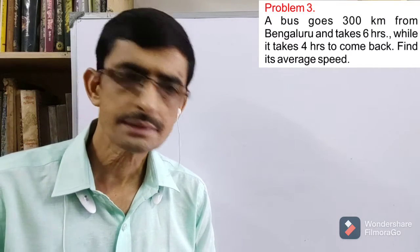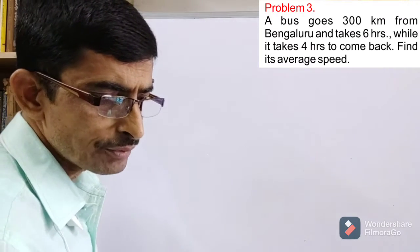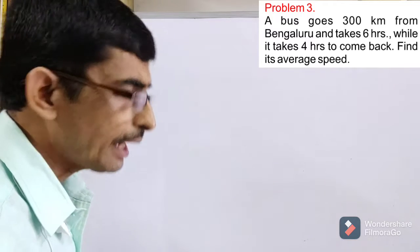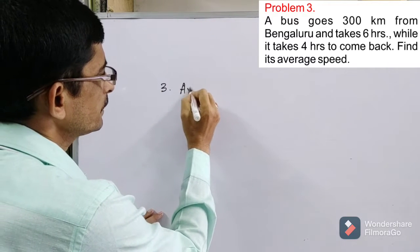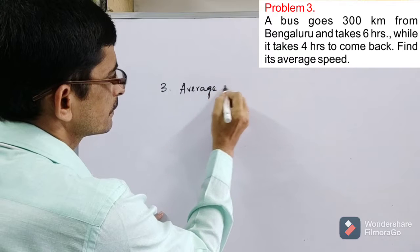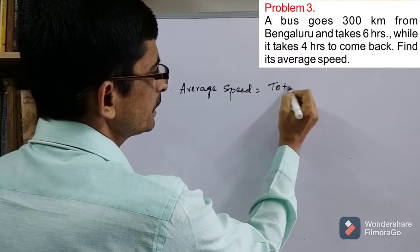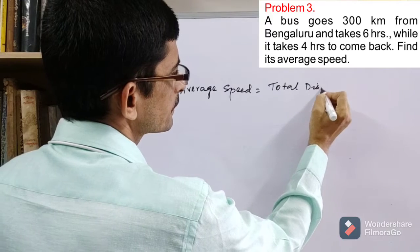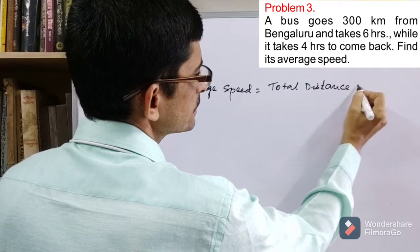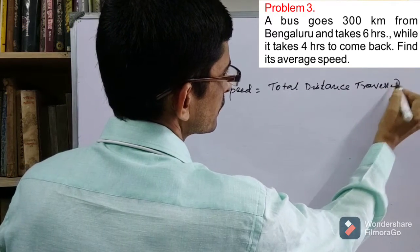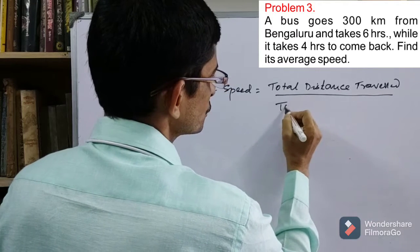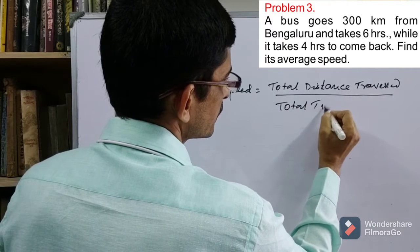In this third problem, we have to find out the average speed. Average speed, we know, is equal to total distance traveled divided by total time taken.